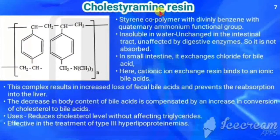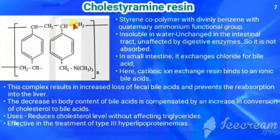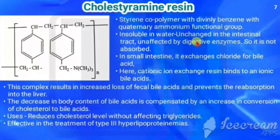The next drug is cholestyramine resin. It is a styrene copolymer with divinylbenzene with a quaternary ammonium functional group. Styrene is a benzene ring with CH=CH2. Divinylbenzene is benzene with two vinyl (CH=CH2) groups. Hence it is a styrene copolymer with divinylbenzene with quaternary ammonium functional group.